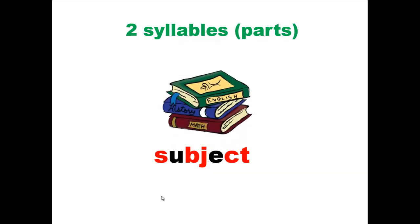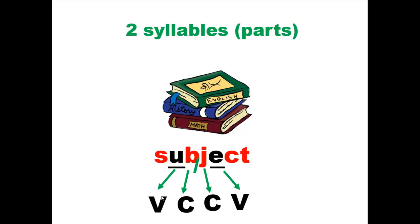Subject. Here are the two vowel sounds. The pattern: vowel, consonant, consonant, vowel. The word should be divided between the two consonants in the middle, which are different consonants. The first syllable is SUB, the second syllable is JECT. Breaking the word into syllables allows you to pronounce the word correctly — the pronunciation of this word is subject.